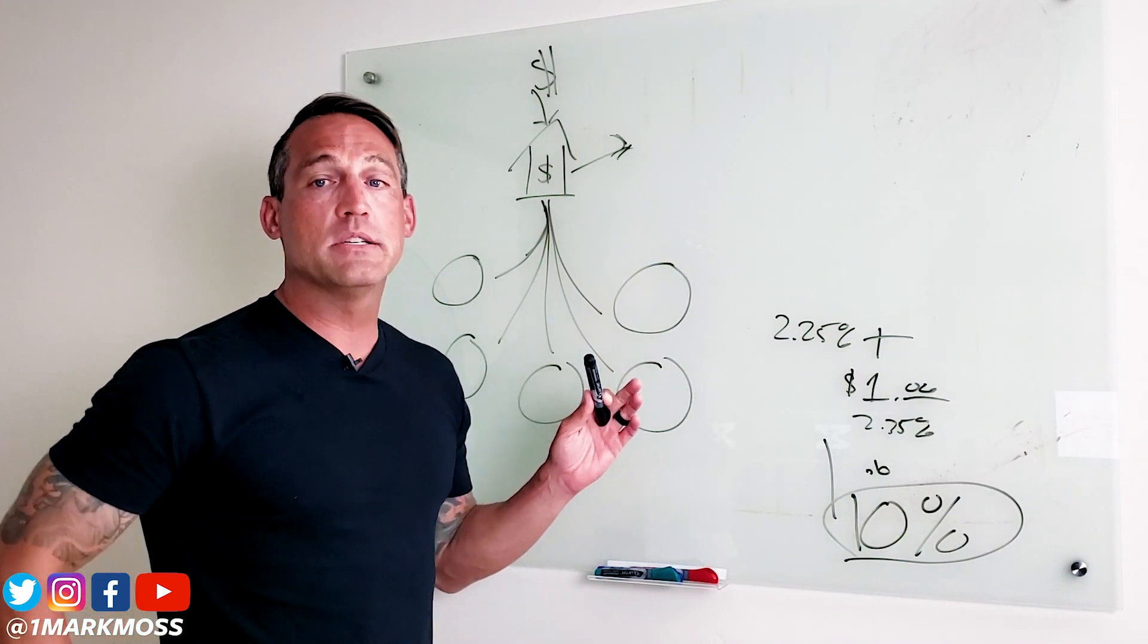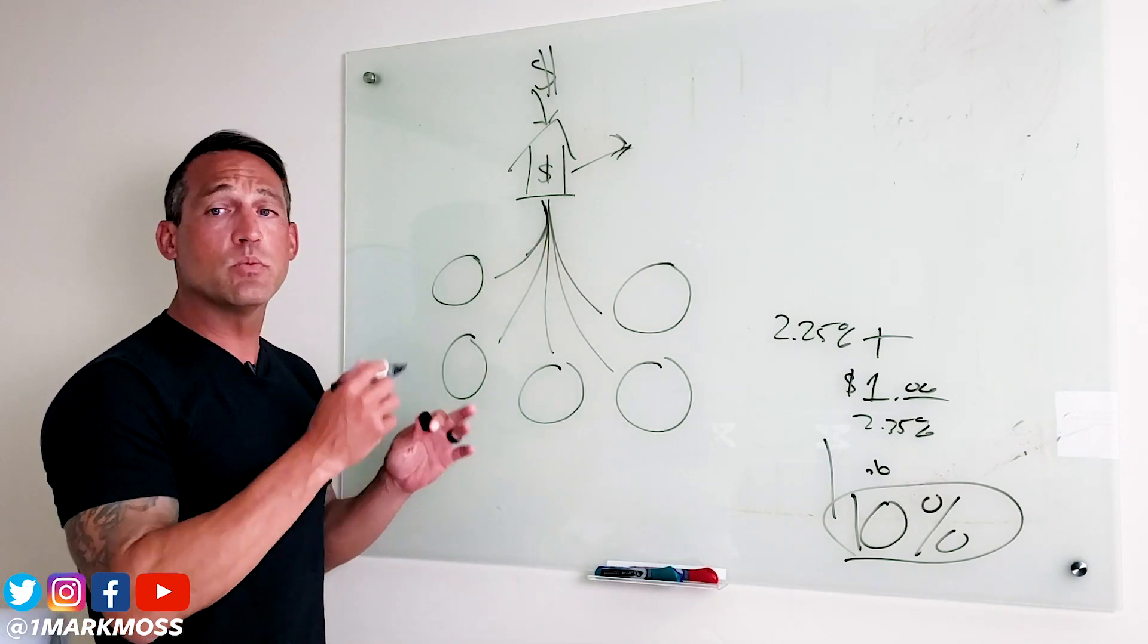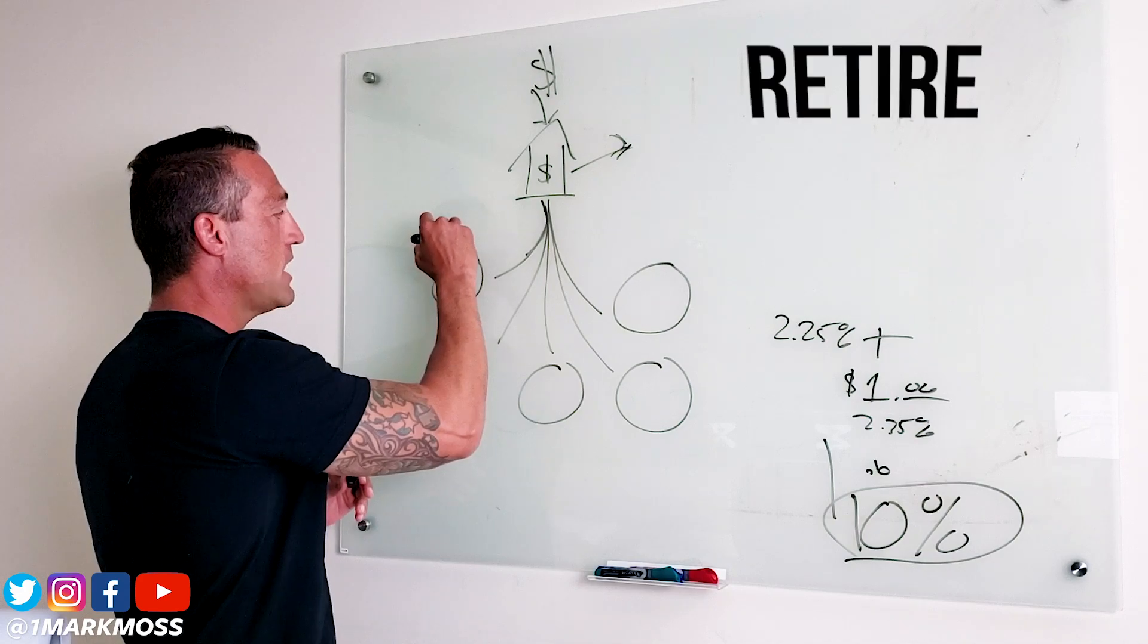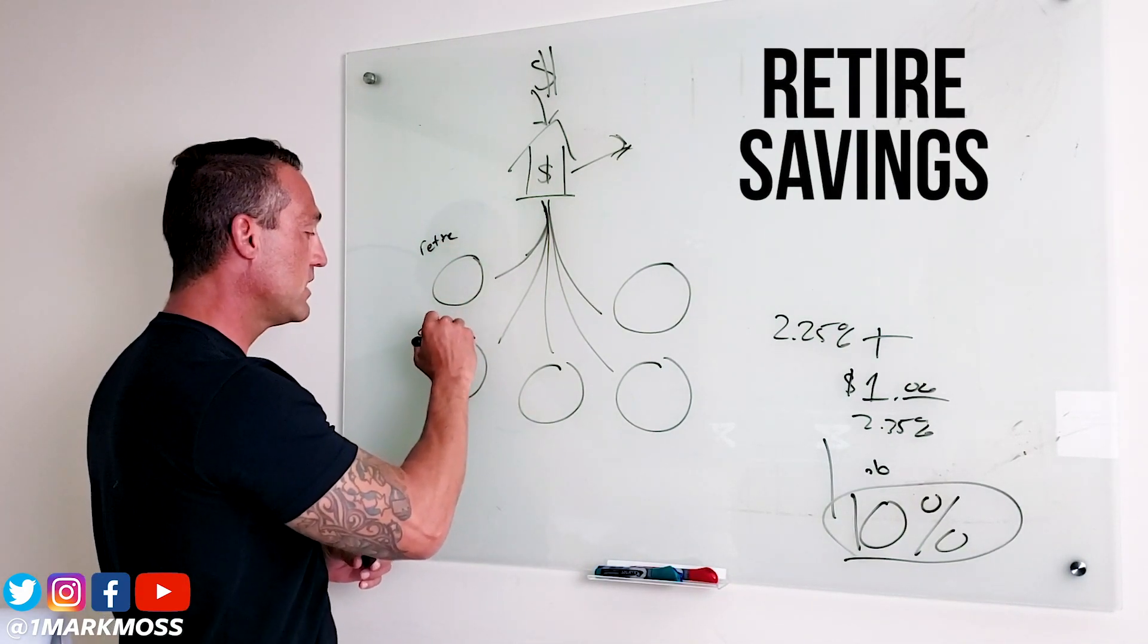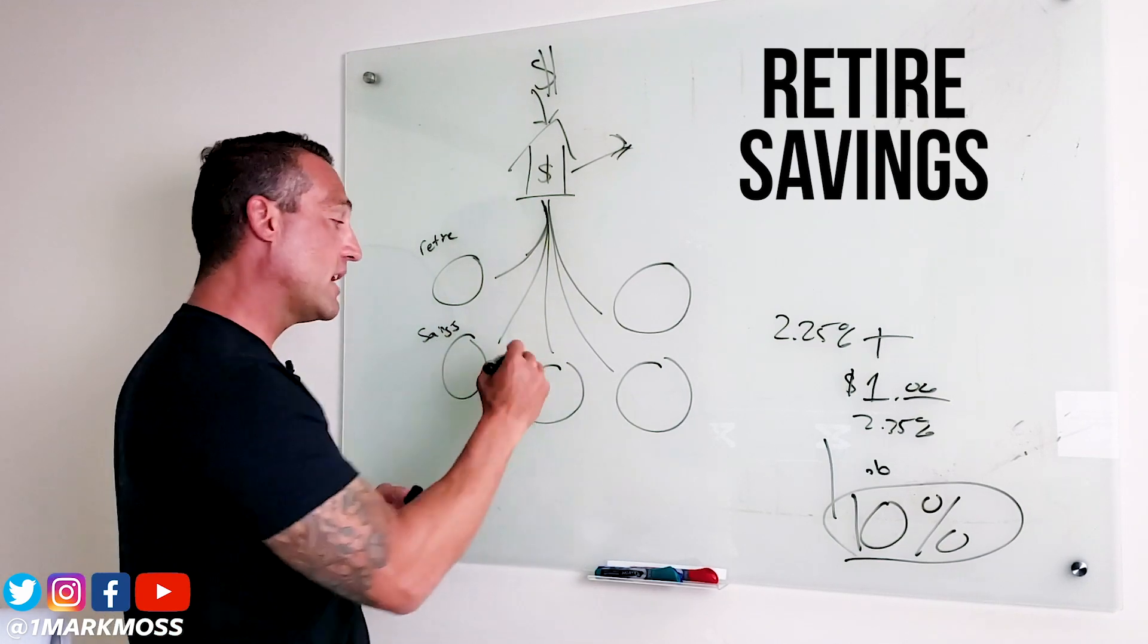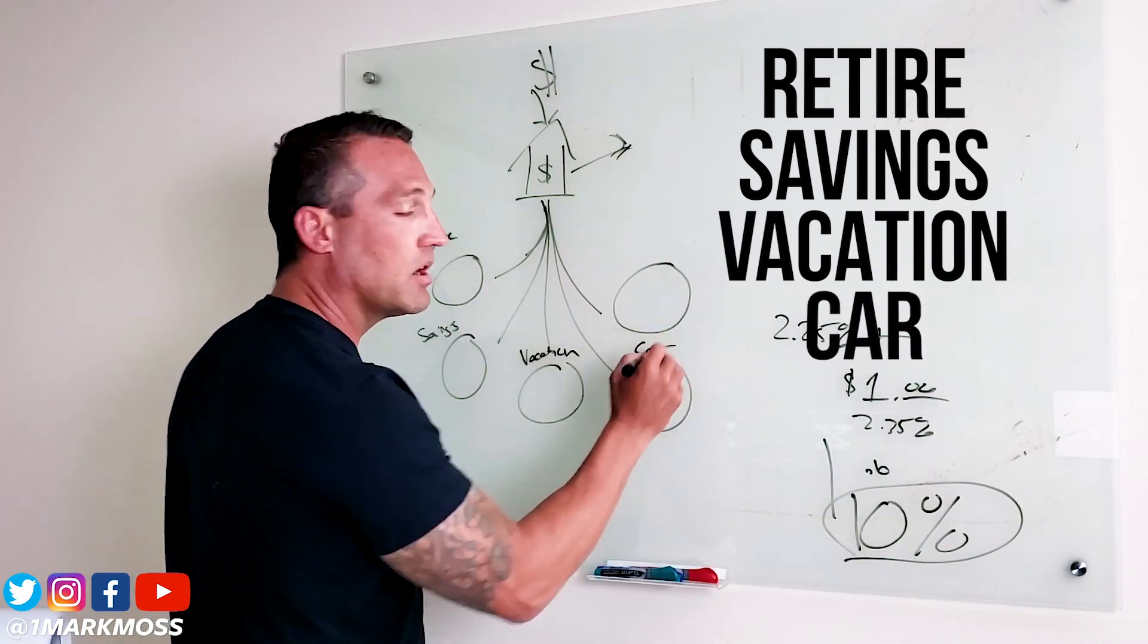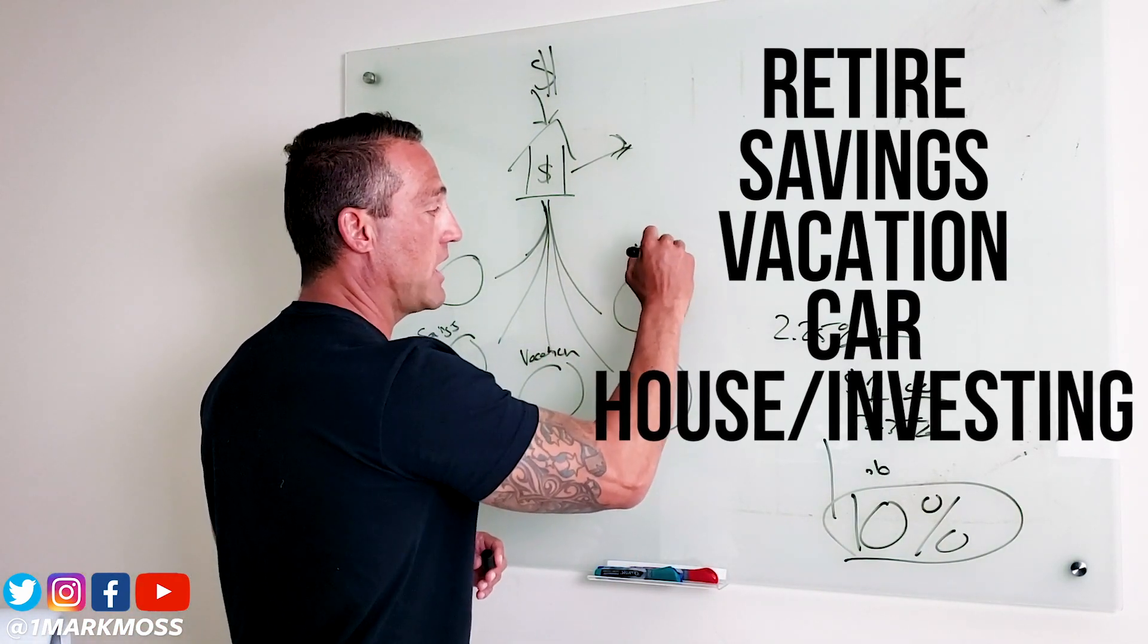All right so here's what we're gonna do. So we have all these banks right here. These are our accounts. Now what we want to do is we want to label these for where we want to put our money. So we have a retire account. We have a savings account. We have a vacation account. I want to have a car account. And let's say that I want to buy a house. So then I have my house account.